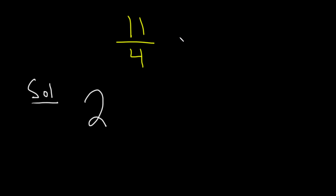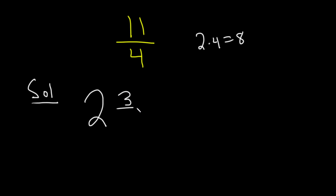Now, what's the remainder — what's left over? Well, three, right? Because two times four is eight, so 11 minus eight is three. You're left with three. So four goes into 11 twice with a remainder of three, and that remainder is going to be three fourths.